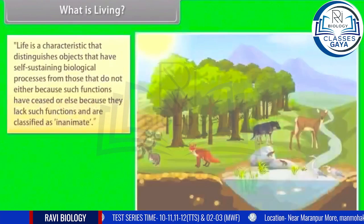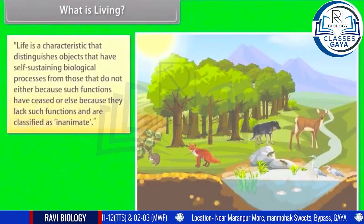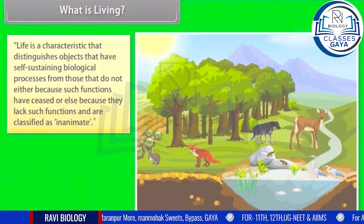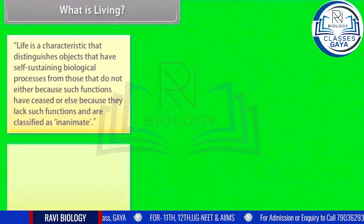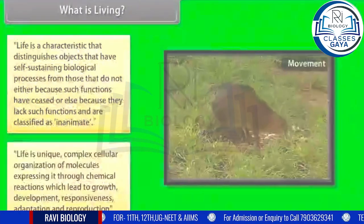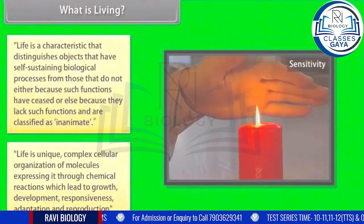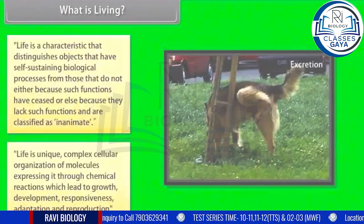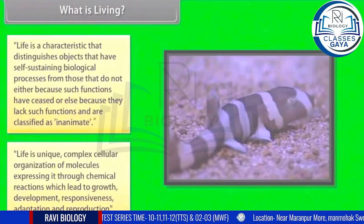Life is a characteristic that distinguishes objects that have self-sustaining biological processes from those that do not, either because such functions have ceased or because they lack such functions and are classified as inanimate. Life is a unique, complex cellular organization of molecules expressing itself through chemical reactions which lead to growth, development, responsiveness, adaptation, and reproduction.